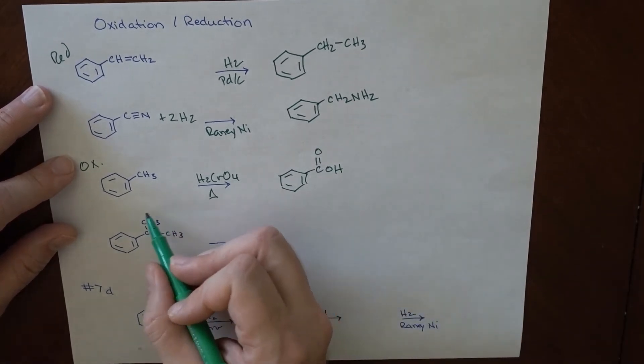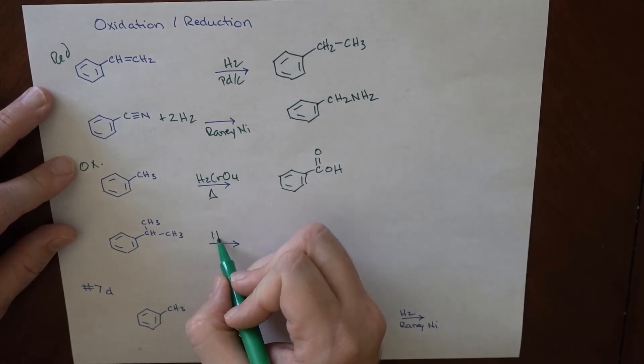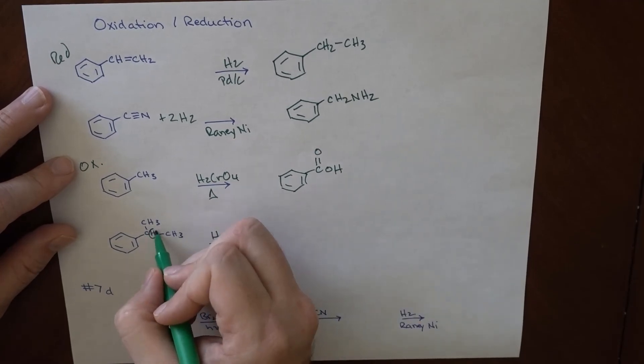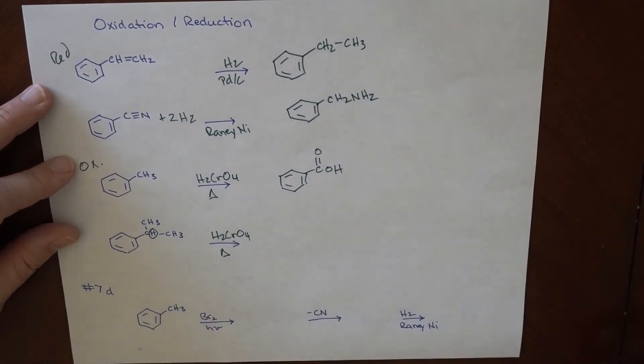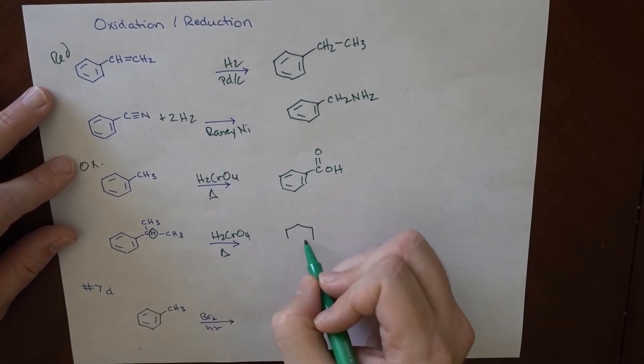And no matter how long the chain is, the same thing will happen. So we'll make a C double bond OH. Provided that there's at least one hydrogen on the carbon that can do that. If there are no hydrogens here, so if this was a trimethyl group, no reaction would occur.